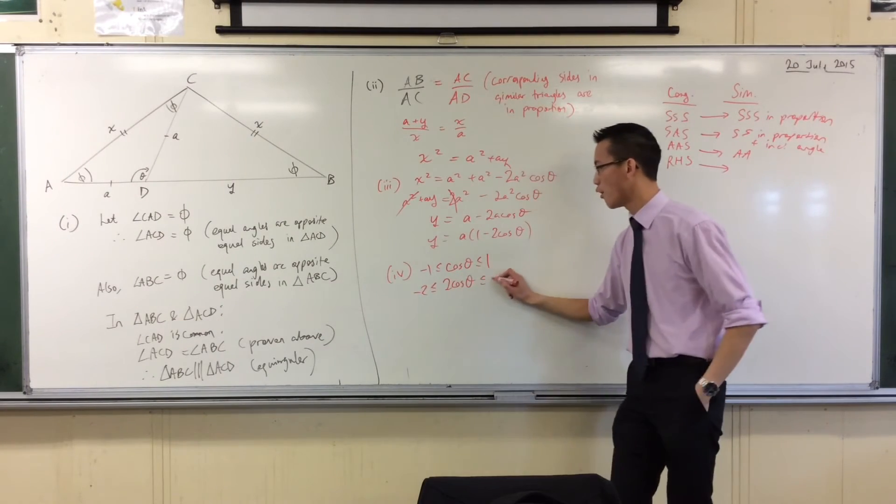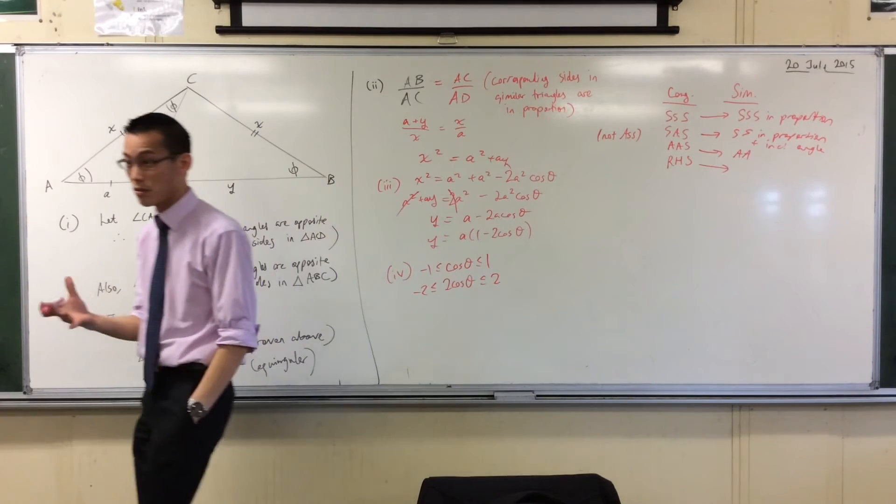It happens I don't have a cos theta here by itself. I have a 2 cos theta. So I'm going to do this. Right? We've seen this before, right? When we were mucking around with domain and range. Right? You've seen this before?